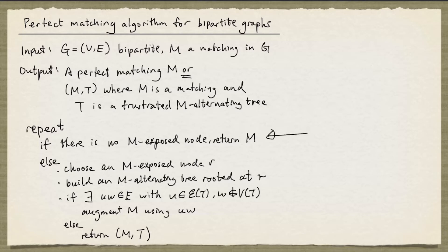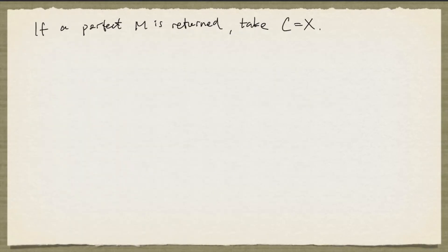So the first case is that it returns a perfect matching. If it returns a perfect matching M, we can simply take one of the partitions as our node cover.